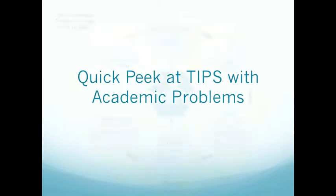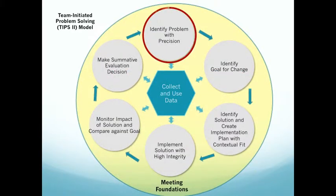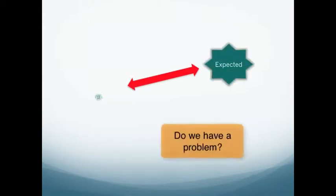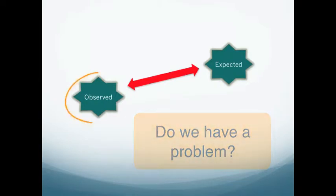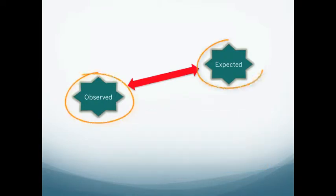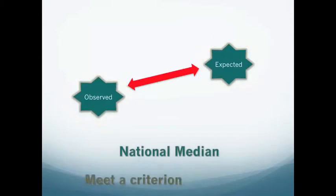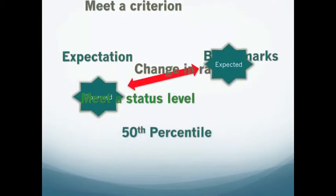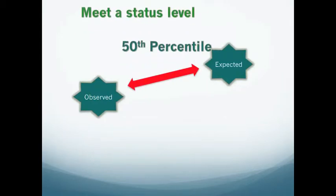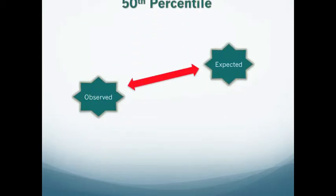So let's take a look at an academic example. Our first step, of course, is going to be problem identification and asking the question: do we have a problem? Is there a difference between what we see and what we want to see — observed versus expected?